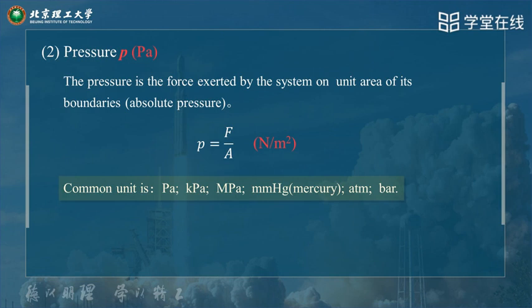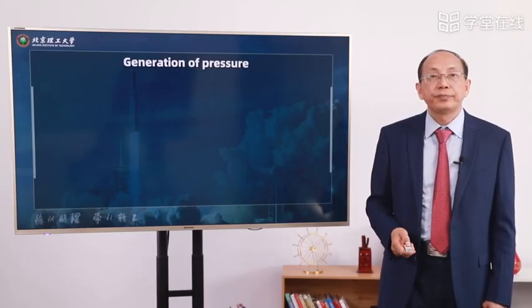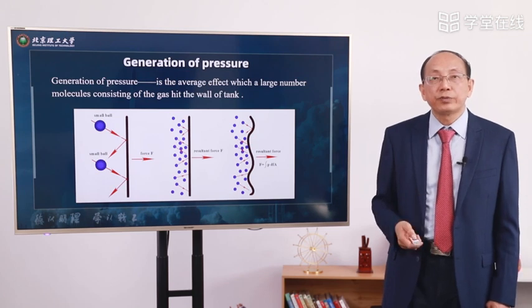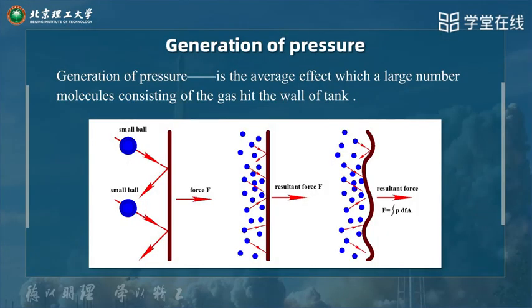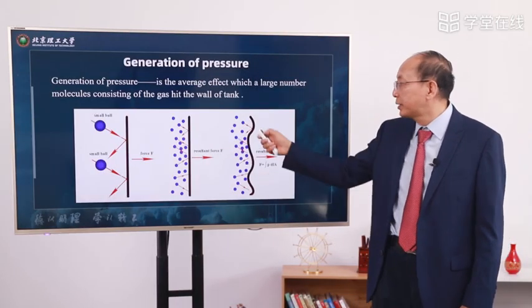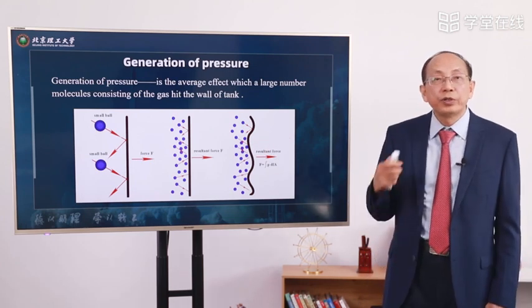The pressure unit is generally Pascal. Because Pascal is very small, sometimes we use kiloPascal and megaPascal to describe the pressure. Sometimes for common use, we use atm and bar as its unit. Generation of pressure: how is pressure produced? The pressure is an average effect of a large number of molecules consisting of the gas hitting the wall of the tank — many very small molecules hit the wall and produce the pressure.